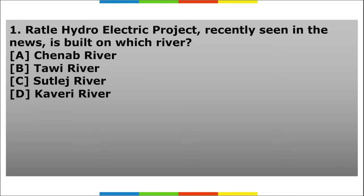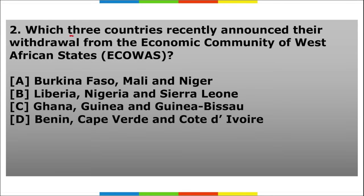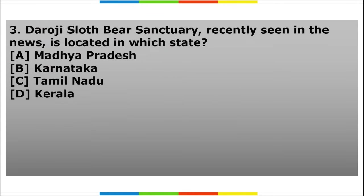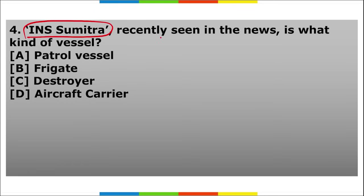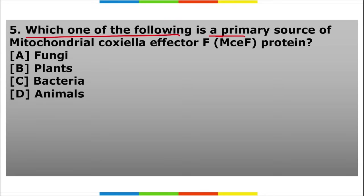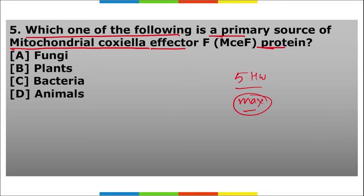Friends, here is your homework section. First: Rattle Hydroelectric Power Project recently seen in news is built on which river? Second: which three countries recently announced their withdrawal from the Economic Community of West African States? Third: Daroji Sloth Bear Sanctuary recently seen in news is located in which state? Fourth: INS Sumitra recently seen in news is what kind of vessel? Fifth: which one of the following is the primary source of mitochondrial COXIAL effector F protein?